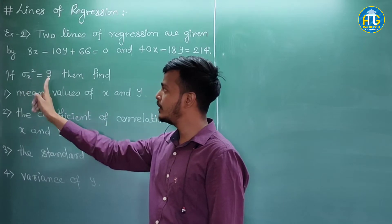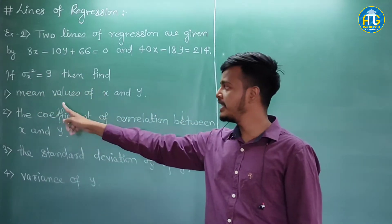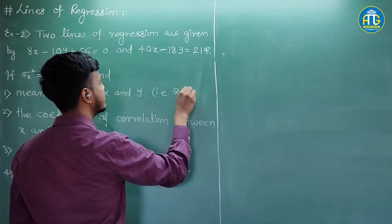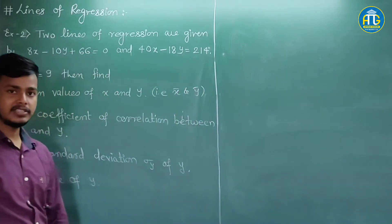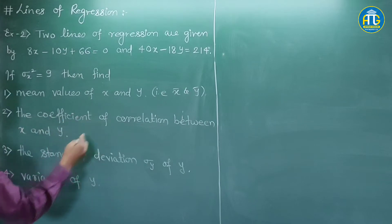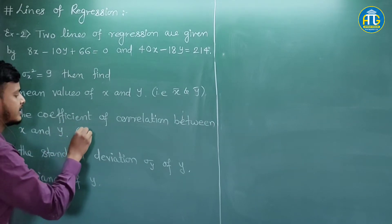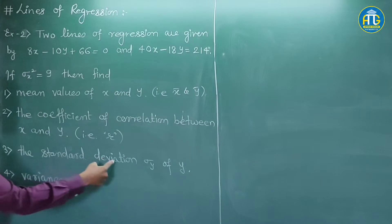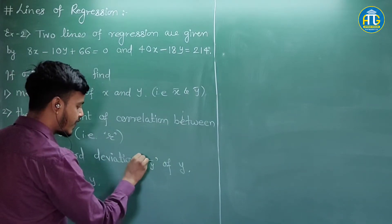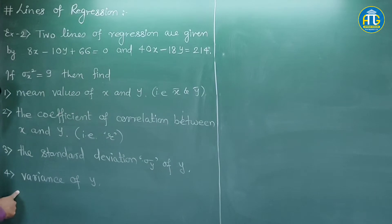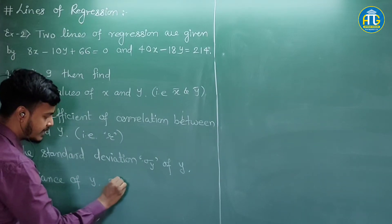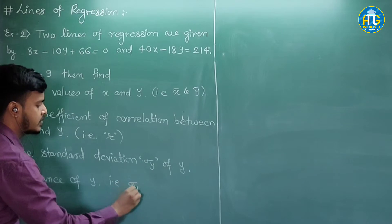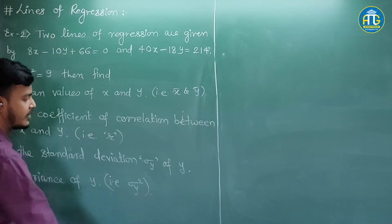If sigma x squared is equal to 9, then find the value of mean values of x and y. We have to find out x bar and y bar, the coefficient of correlation between x and y (that is small r), the standard deviation sigma y of y, and finally the variance sigma y squared. So these four things we have to find out in this problem.